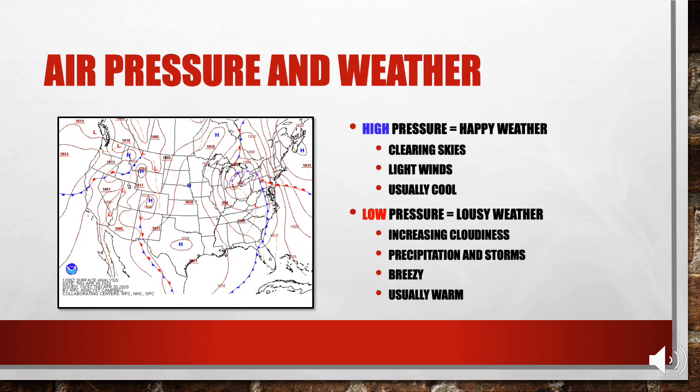What does air pressure mean for our weather conditions? High pressure at ground level leads to happy weather — it is associated with clearing skies, light winds, and usually cooler temperatures. On the other hand, approaching low pressure is associated with lousy weather, including increased cloudiness, precipitation and storms, increased wind speeds, and usually warmer conditions.